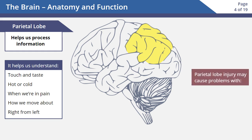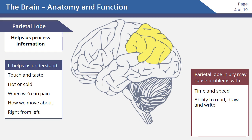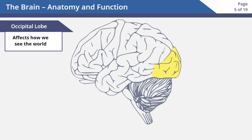If someone has an injury to the parietal lobe, they may have problems with time and speed, along with their ability to read, draw, and write. They may also have difficulties moving around in a space without bumping into things, or have problems understanding right and left.